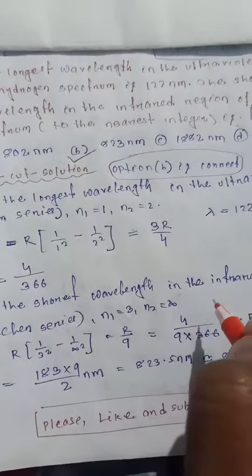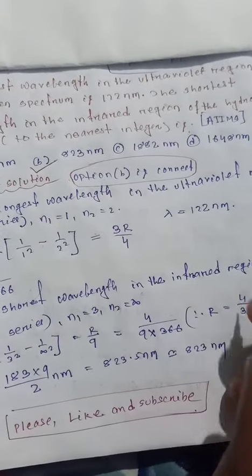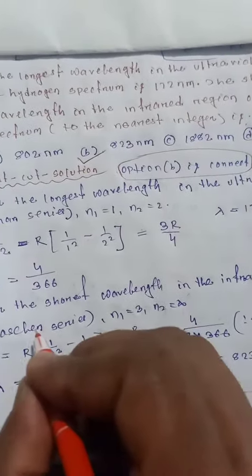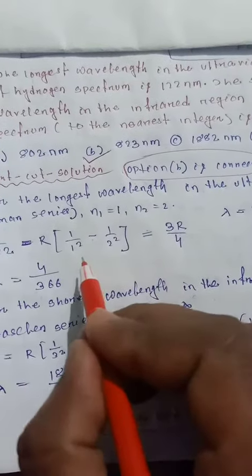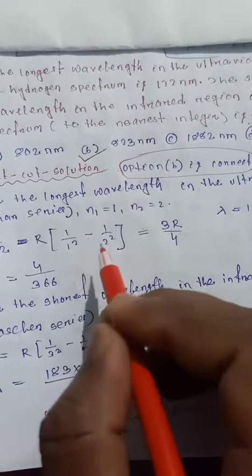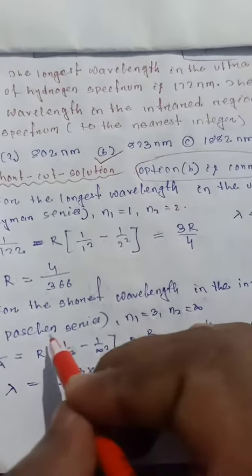For the shortest wavelength in the infrared region, infrared region means Paschen series. The first one is ultraviolet, then visible, then infrared which is Paschen series.